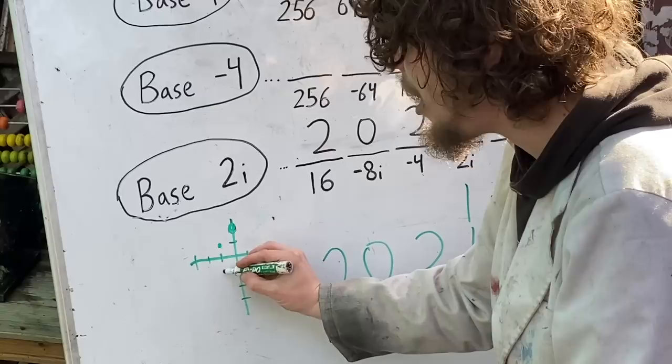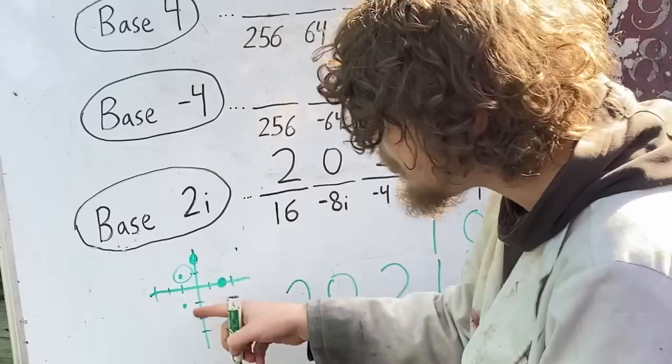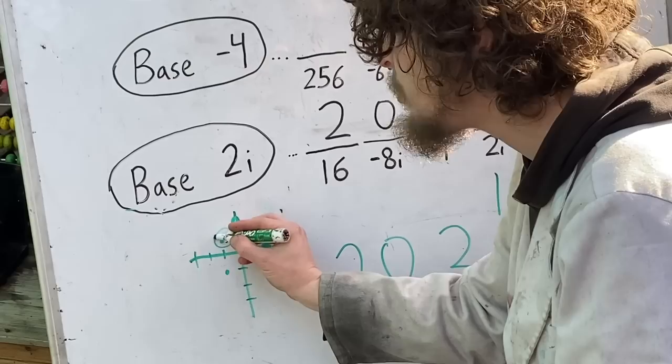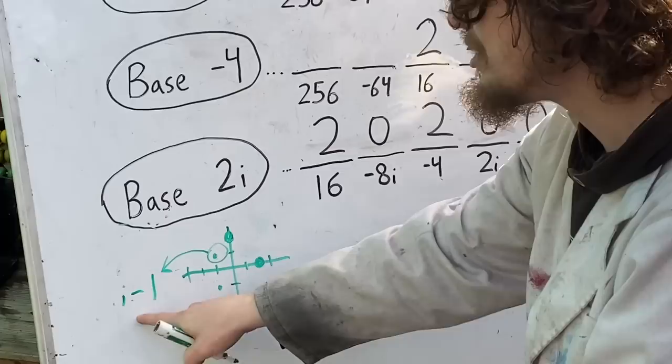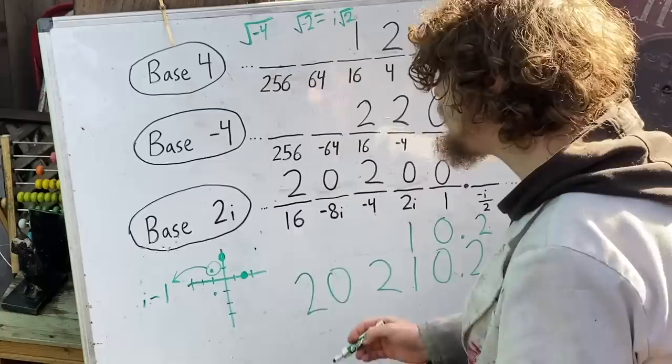And we'll focus on this one because they're quite similar and that one's a little easier to explain, which was base negative 1 plus i, which we can also write as i minus 1. And this base is pretty awesome because it can achieve some pretty similar things to base 2i using only the digits 0 and 1.